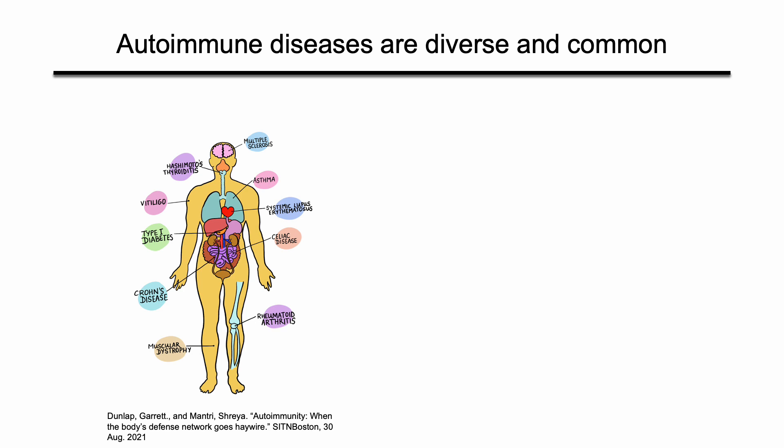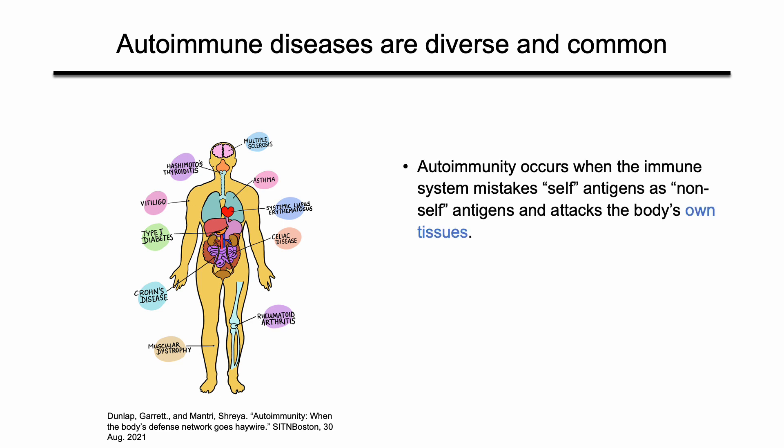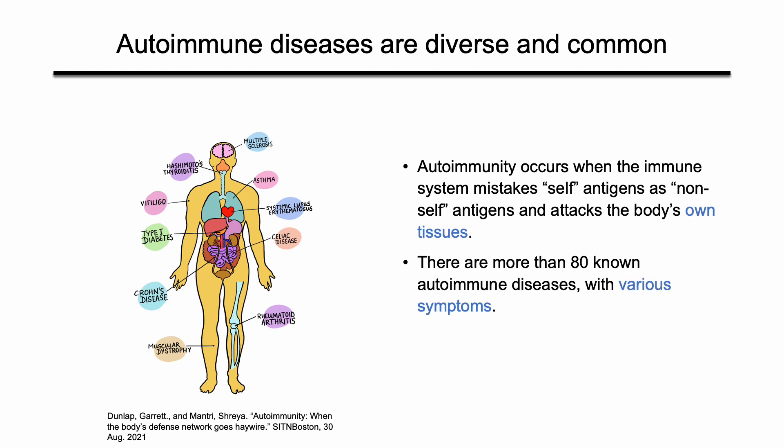I'd like to begin my presentation with a very brief introduction to autoimmunity. Autoimmunity is an immune response where the immune system attacks the organism's own healthy tissues because it mistakes the self-antigen as non-self. In humans, there are more than 80 known autoimmune diseases, such as multiple sclerosis, asthma, and type 1 diabetes. Autoimmunity can affect nearly every part of the body and leads to various results.